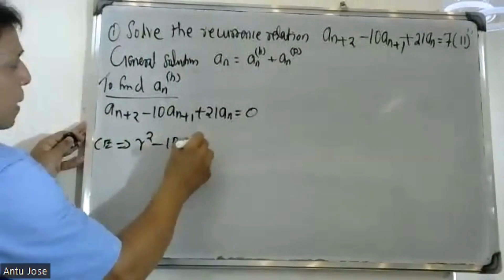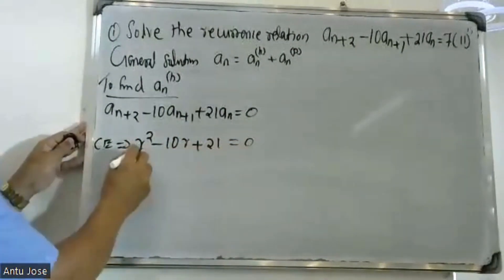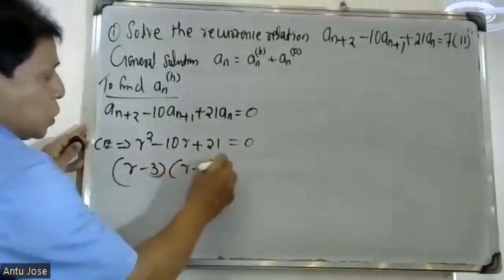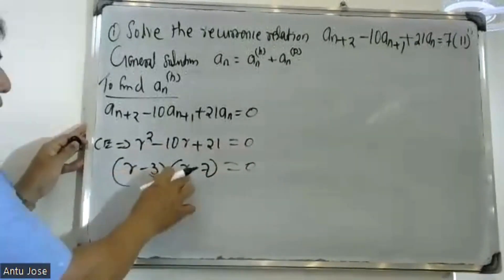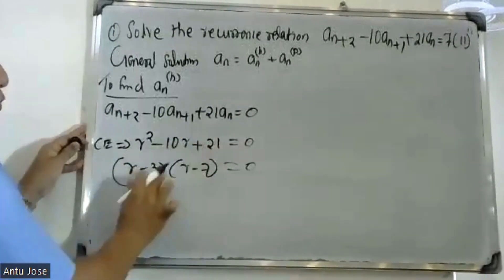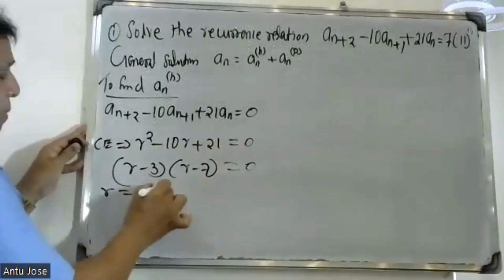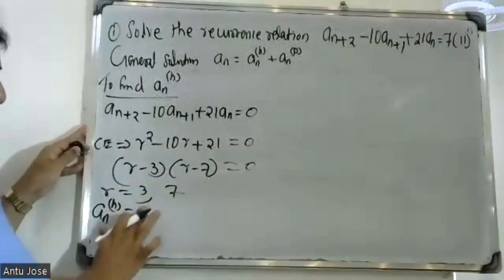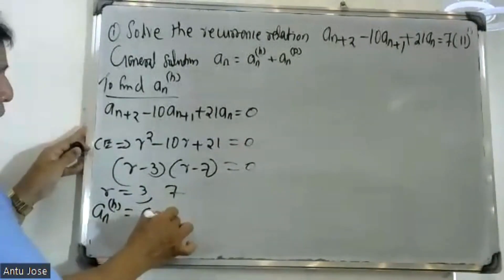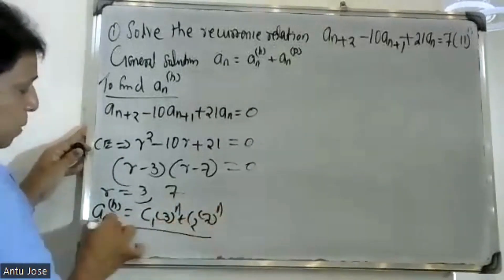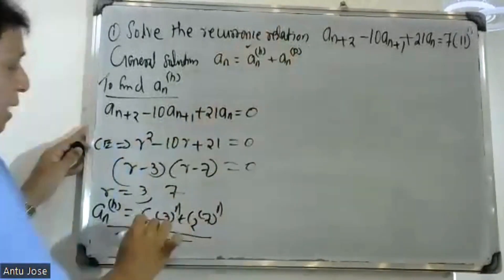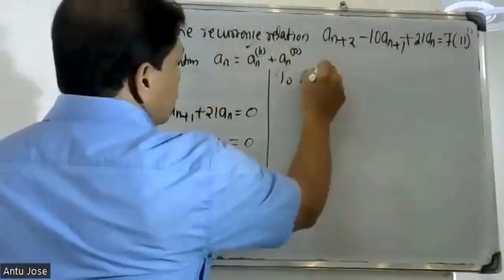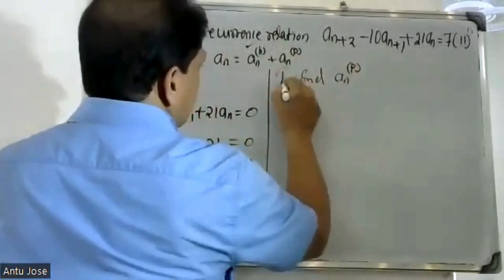To find the homogeneous solution, the characteristic equation is r² - 10r + 21 = 0. Solving this gives roots r = 3 and r = 7. Therefore, the homogeneous solution is a(n,h) = c1·3^n + c2·7^n. Now we need to find the particular solution a(n,p).